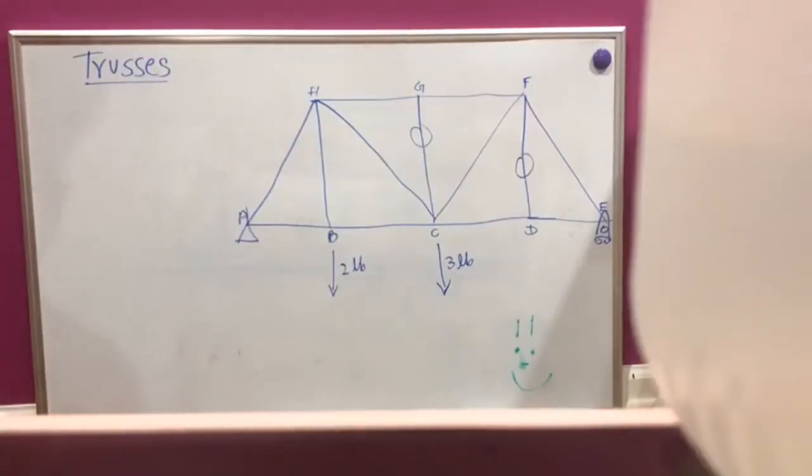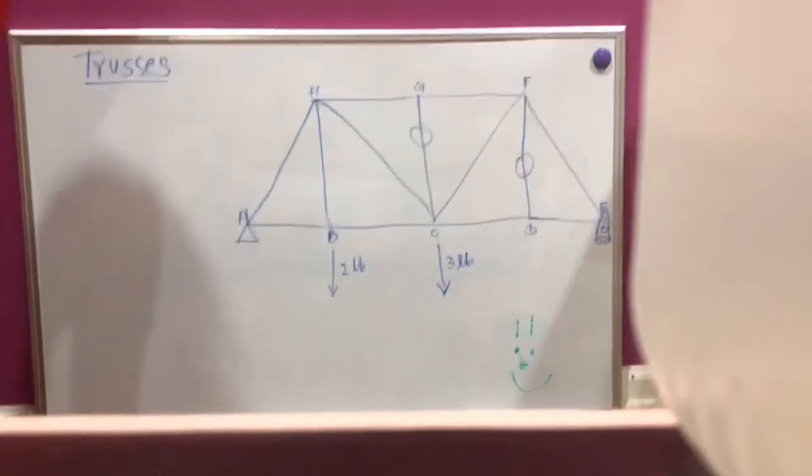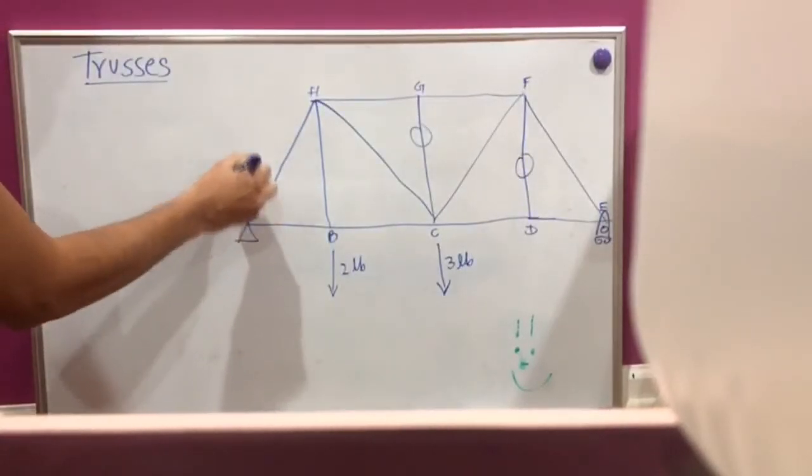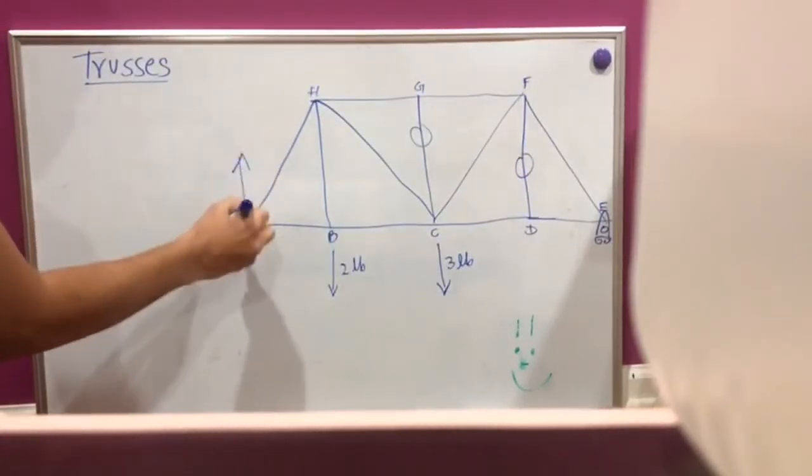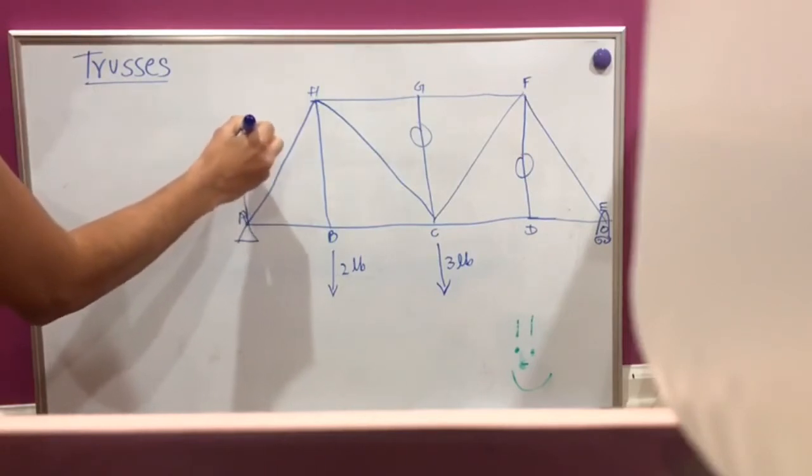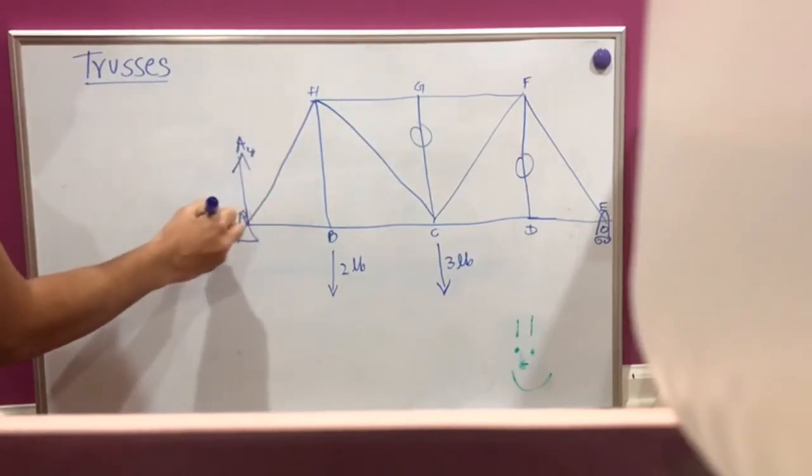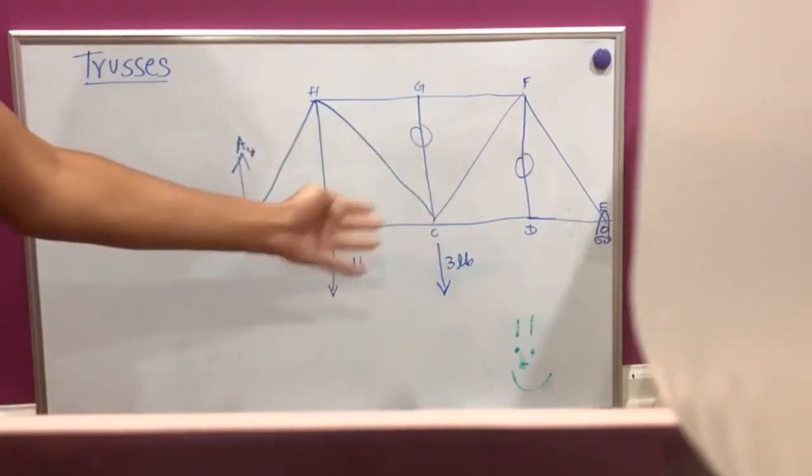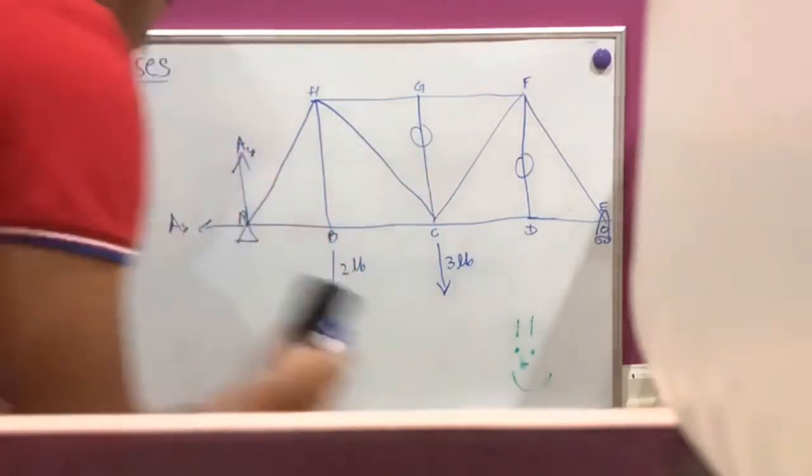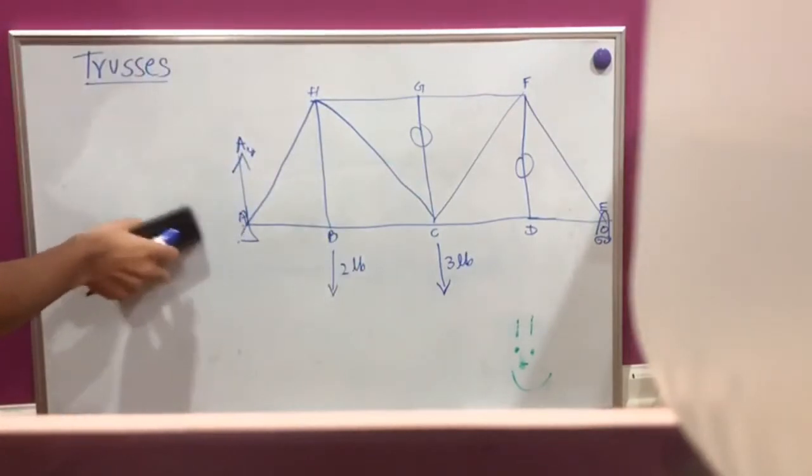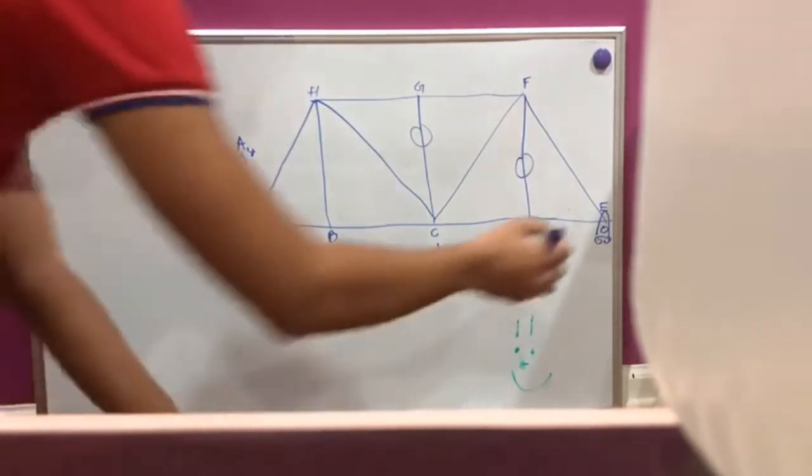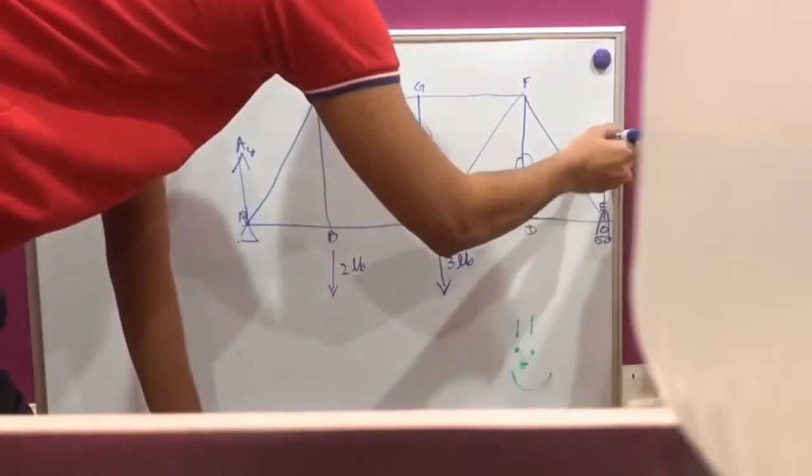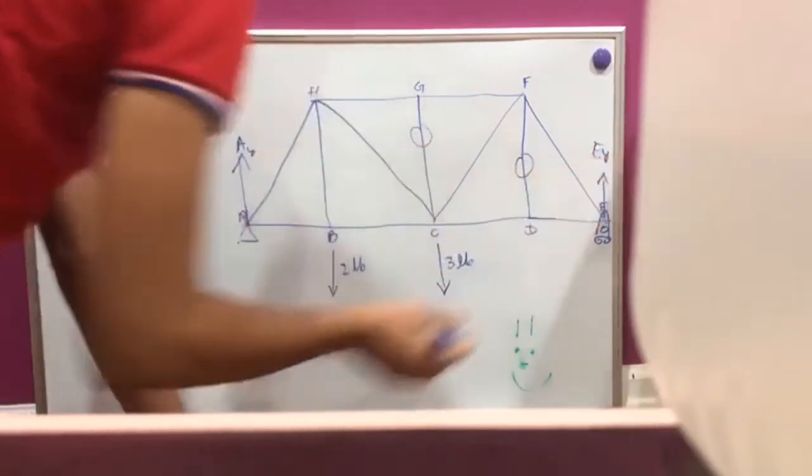The next thing we are going to do is find out the global forces. So because we have a pin here, that's going to be a force going upwards, and this will be AY, and there will be one going in the X direction. But because there's no force in the X direction, we can just remove that because it's going to be zero. Similarly, E will have a force upwards, and we're going to call it EY.